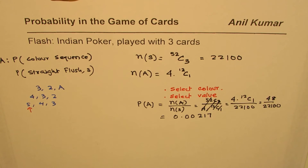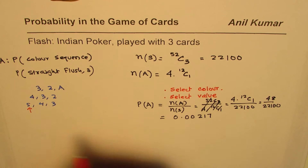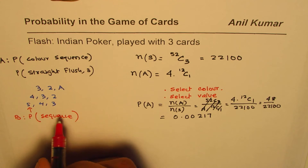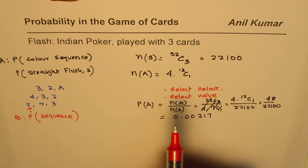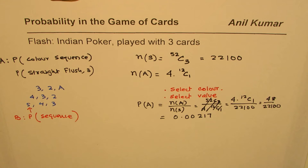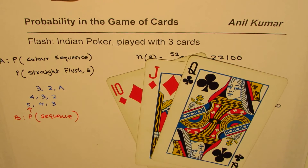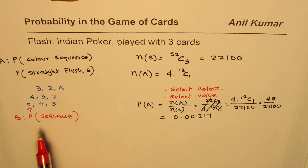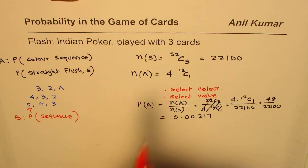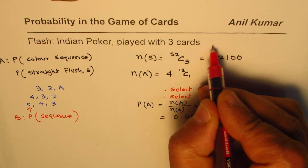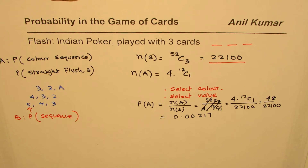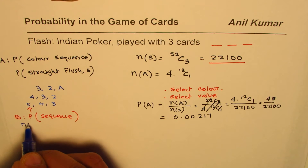Now let's do the next event, which we're calling a straight or a sequence. In the case of a sequence, the suits could be mixed up — it is not necessary to have all cards of the same suit. Because of that, the probability of such a sequence is much higher. The sample space is the same since we are still selecting three cards, so total options are 52C3, which is 2200.